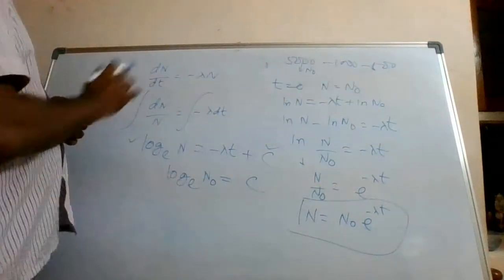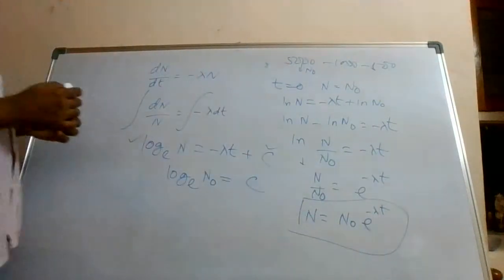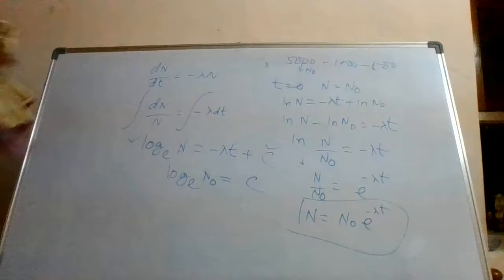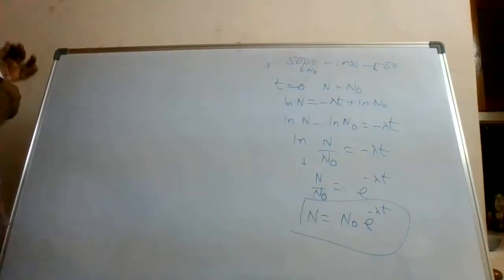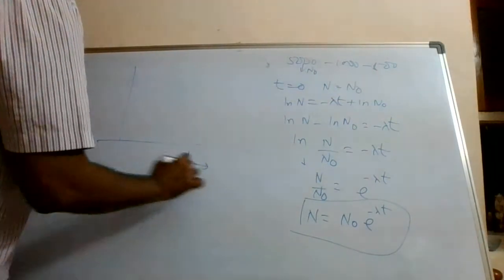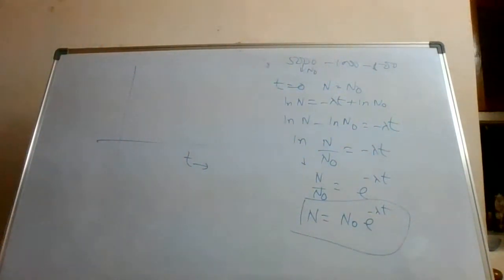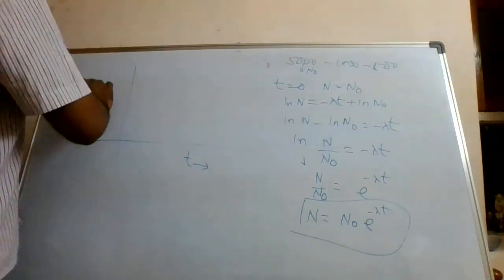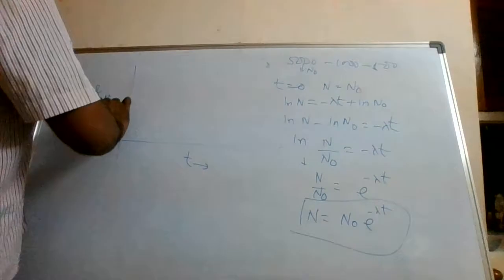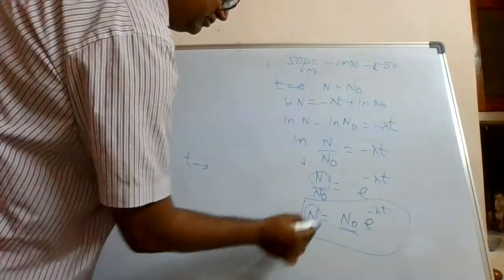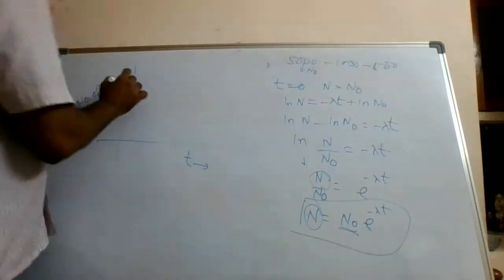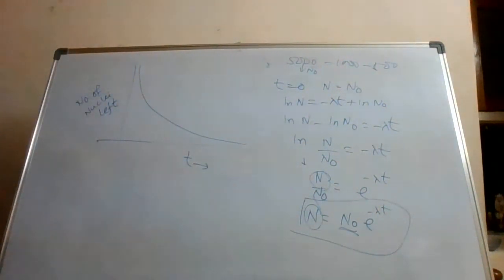This decay process is exponential, not linear. If you plot a graph with the x-axis as time and the y-axis as the number of nuclei left, starting from N₀, you get an exponentially decreasing graph.